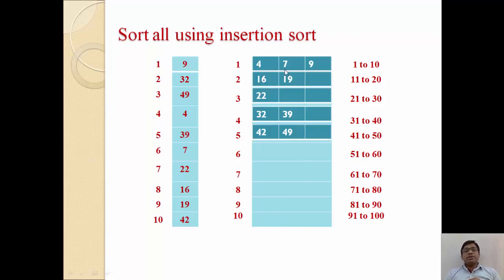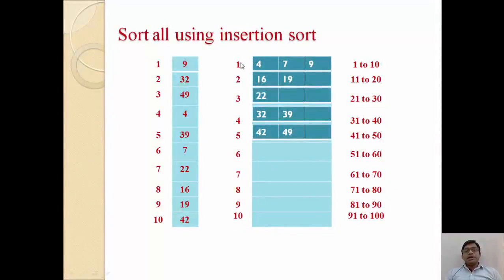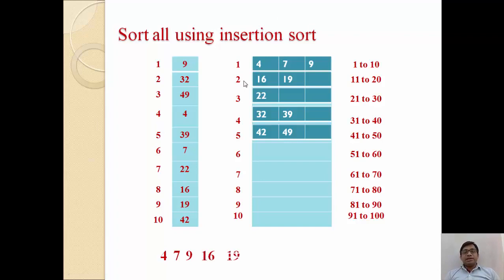Now we have a list of buckets where every element is in ascending order. The next step is to read the buckets in the same sequence and store the elements in a new array. We read the first bucket: 4, then 7, then 9. Then the second bucket: 16, then 19. Then the third bucket: 22. Then the fourth bucket: 32, then 39. Then the fifth bucket: 42, then 49. This new list of numbers is now in ascending order.